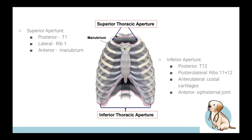The superior thoracic aperture is essentially between your first ribs. Your first rib pokes above your clavicle a little bit, so it's the rib that defines it rather than the clavicle. It's bounded posteriorly by T1 and anteriorly by the manubrium. The inferior aperture is bounded posteriorly by T12 - so T1 to T12 is your thorax, which makes sense as those are your thoracic vertebrae. Posterolaterally you have ribs 11 and 12, and then your costal cartilages, and the xiphisternal joint.